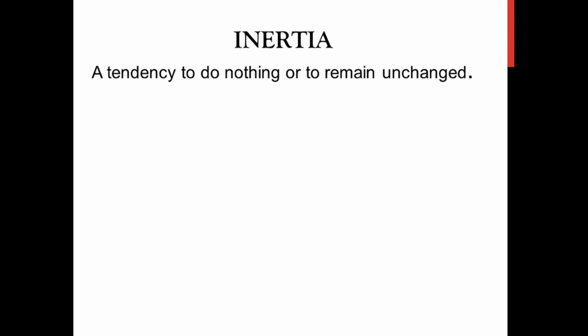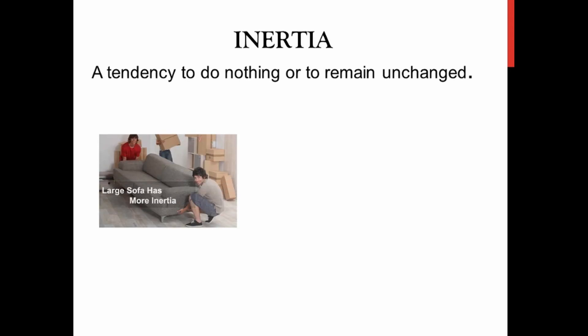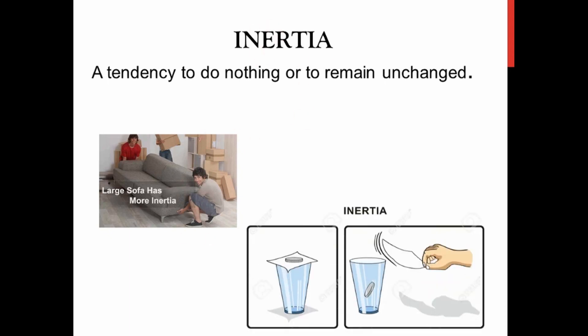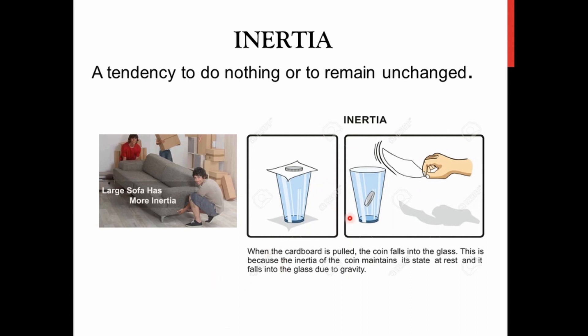Inertia is the tendency to do nothing or to remain unchanged. If an object is in a stable state it remains stable; if it is moving it continues moving. A simple example: for a small sofa you can easily push and move it, but for a larger sofa the tendency to remain unchanged — the inertia — is much higher.